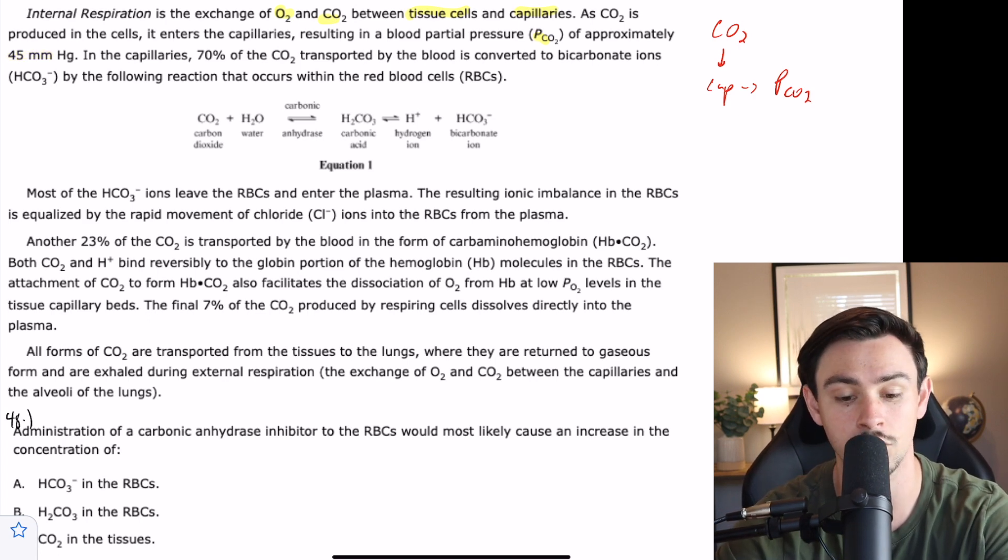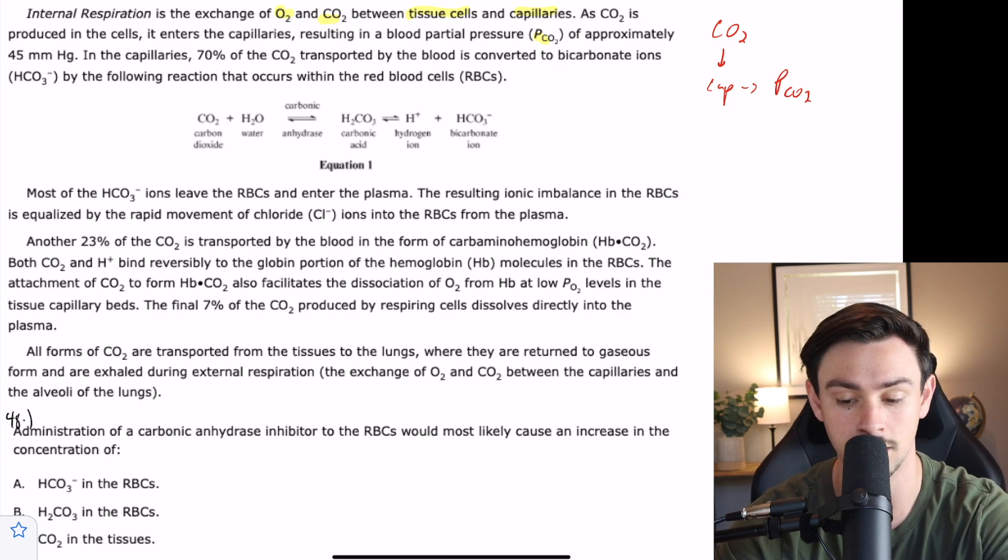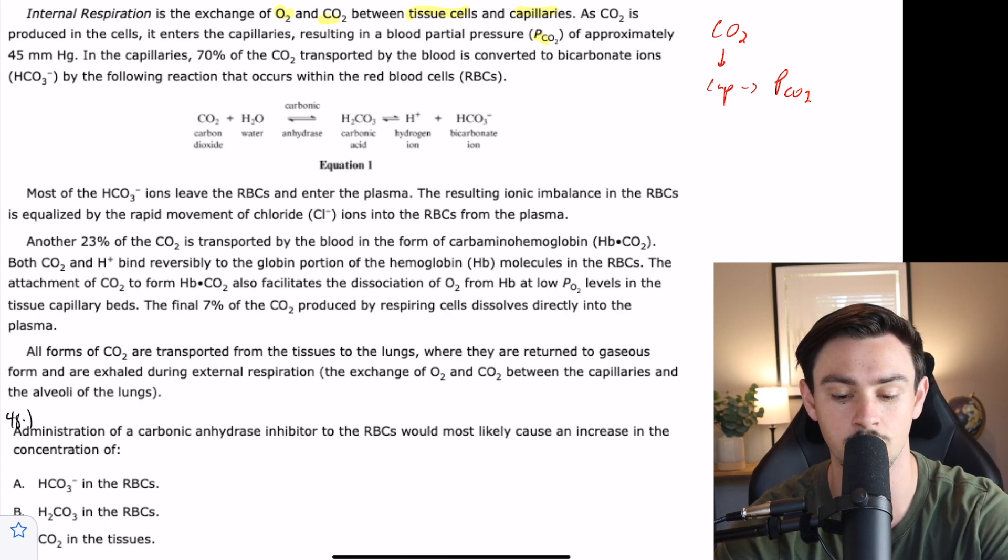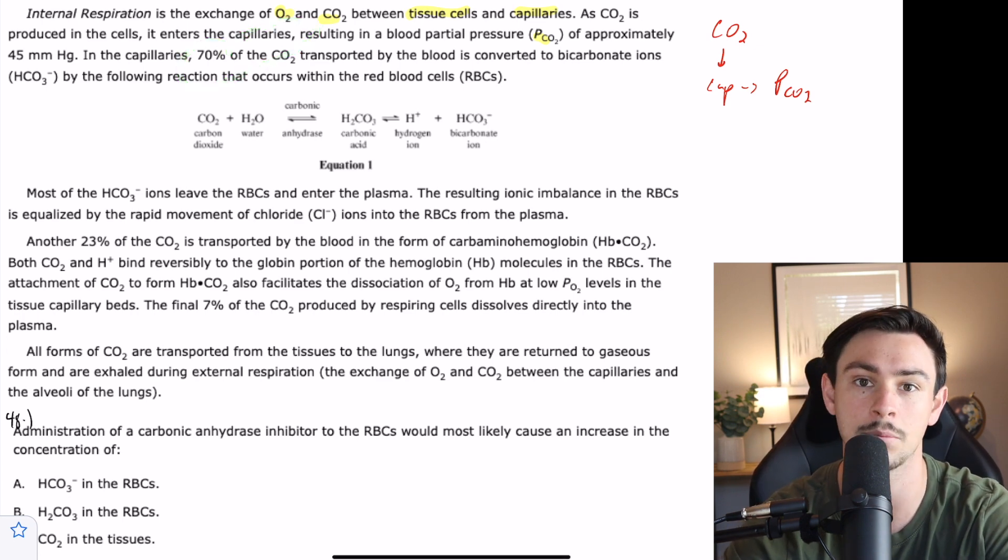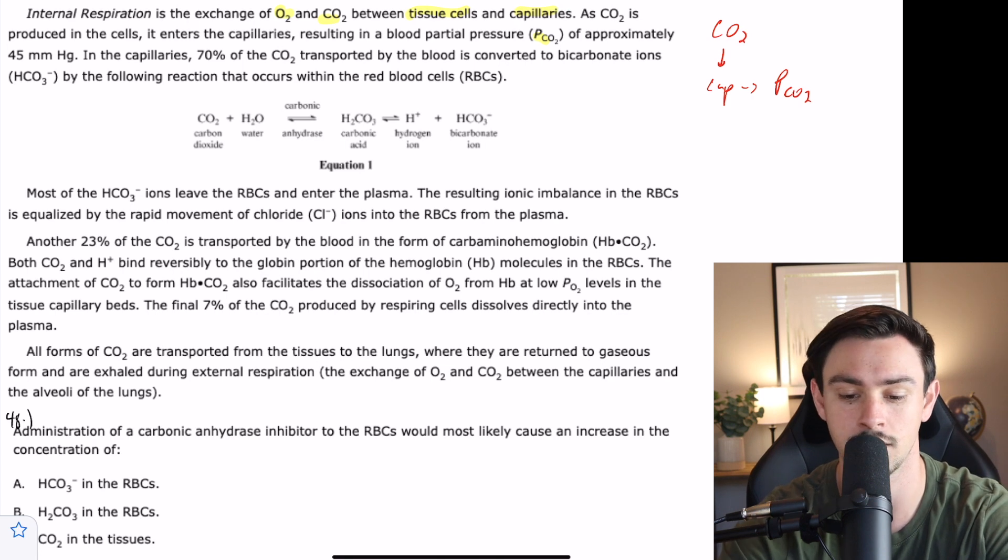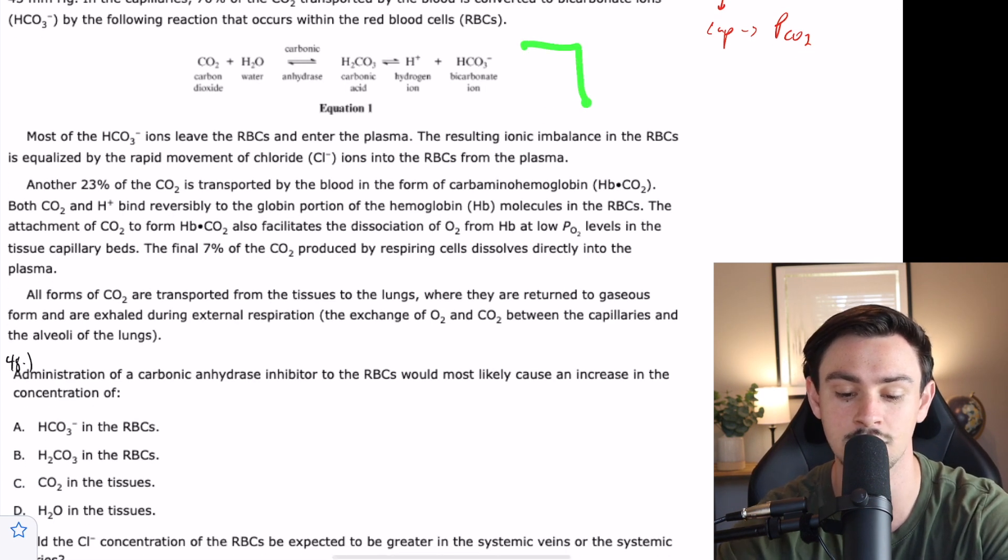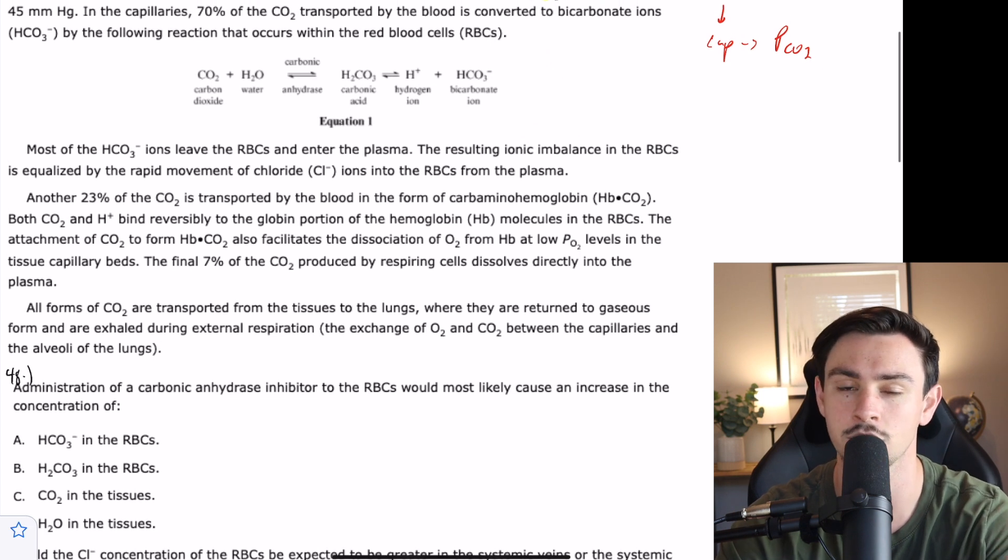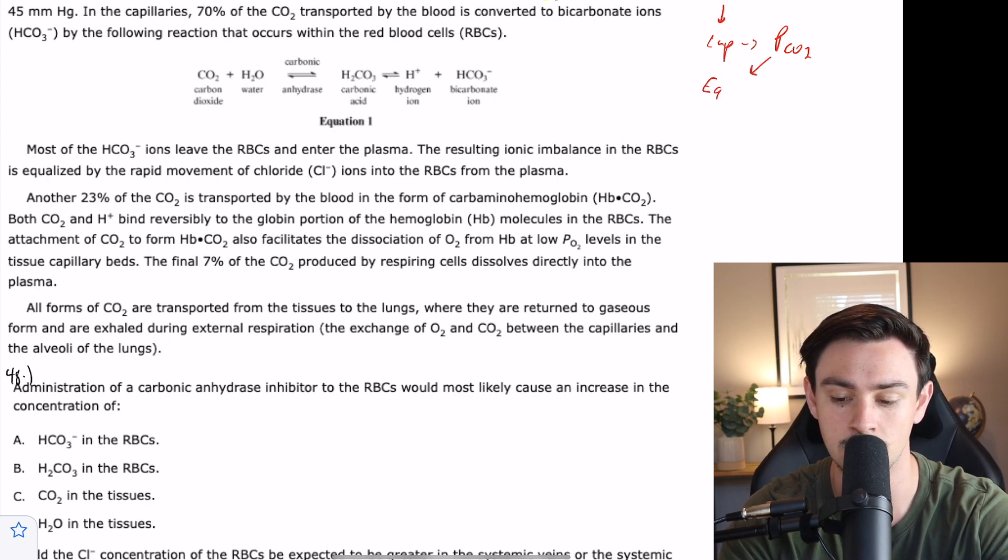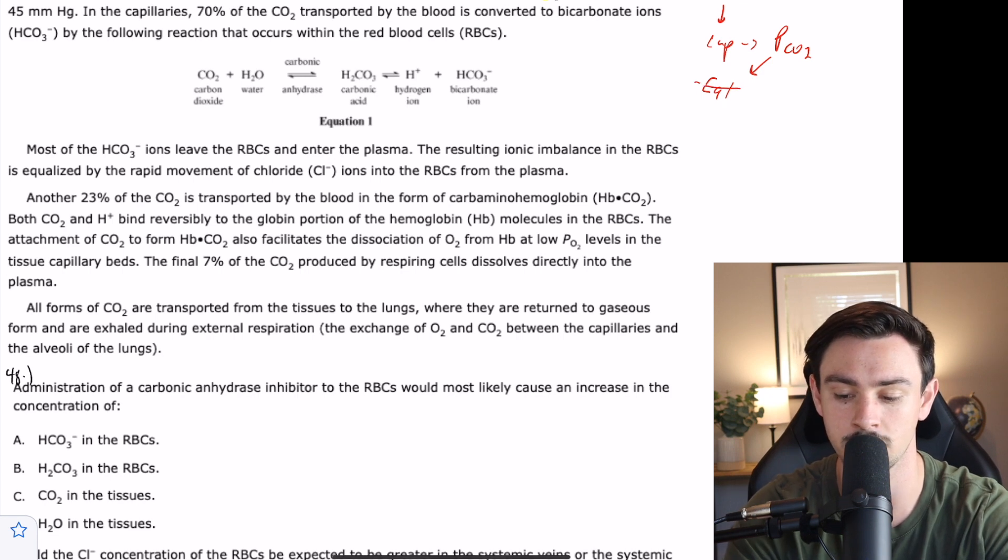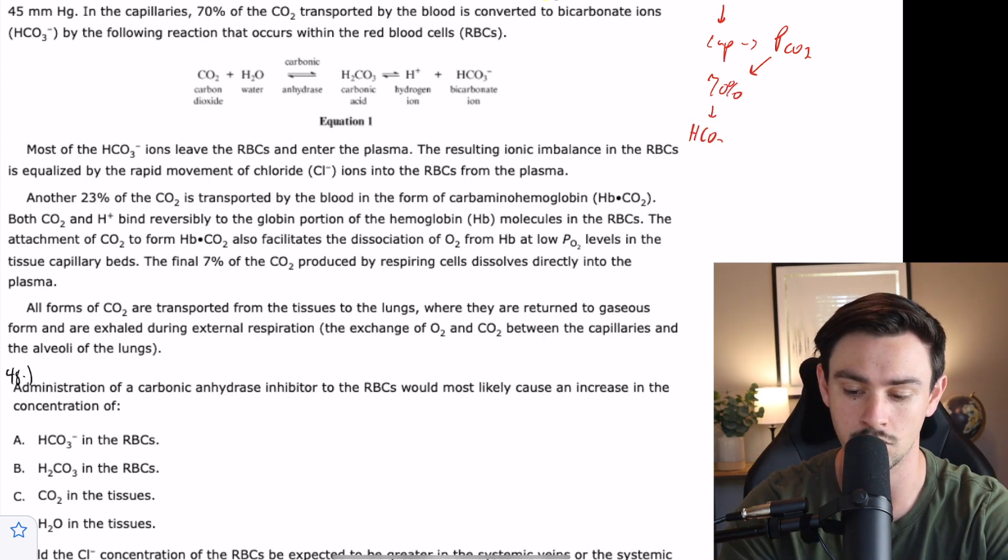In the capillaries, about 70% of the carbon dioxide transported by the blood is converted to bicarb by the following reaction that occurs within the red blood cells. You notice that it tells us what happens to 70% of it, but doesn't tell us what happens to the other 30%. I am going to say 70% of this is converted to bicarb.